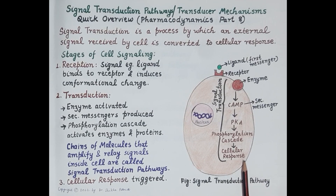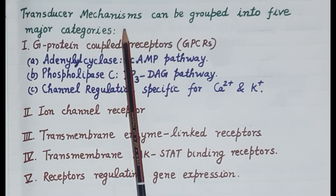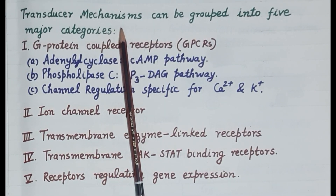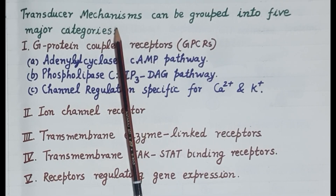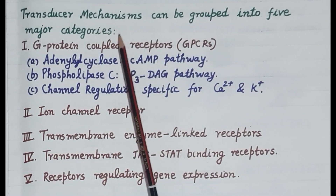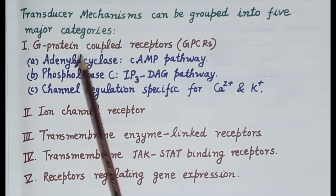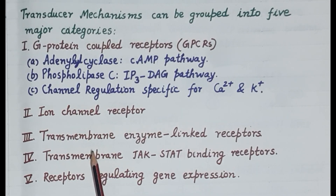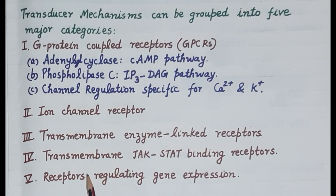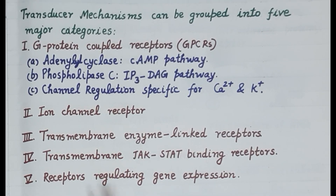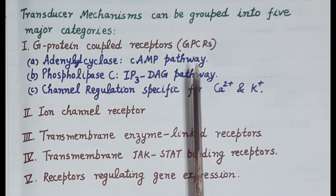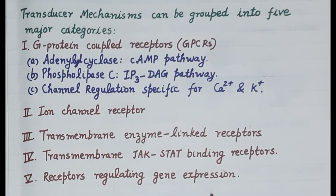This is how an external signal brought by a ligand is converted into a cellular response — a physiological or pharmacological response. Signal transducer mechanisms are highly diverse and highly specific to each receptor, each signal or ligand, and to each type of target cell. Transducer mechanisms can be grouped into five major categories: G-protein coupled receptors, ion channel receptors, transmembrane enzyme-linked receptors, transmembrane JAK-STAT binding receptors, and receptors regulating gene expression.